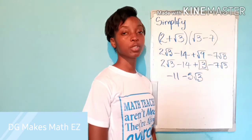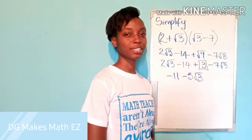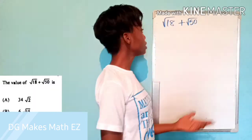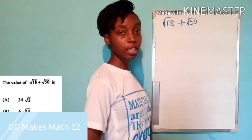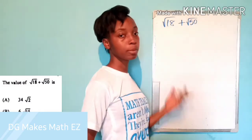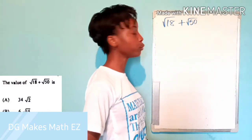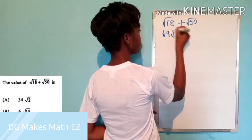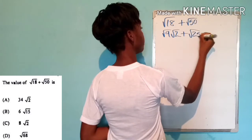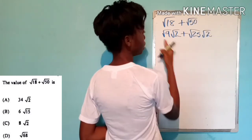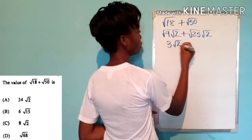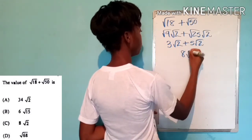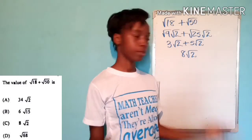Now I have three CSEC multiple choice questions. Our first CSEC question is to simplify root 18 plus root 50. The common factor of 18 and 50 is 2, so we express both terms as products of root 2: root 9 times root 2 plus root 25 times root 2. This gives 3 root 2 plus 5 root 2, which equals 8 root 2, and we are done.